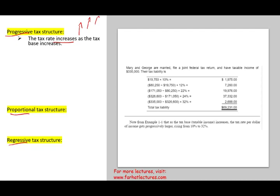It progresses up. As you pay, it goes up. The more you make, the more you pay. Example is the U.S. income tax system. The best way to illustrate this concept is to look at an example. Mary and George are married, file a joint return, and have a taxable income of $335,000 for a given year. This is how their tax liability will be computed.